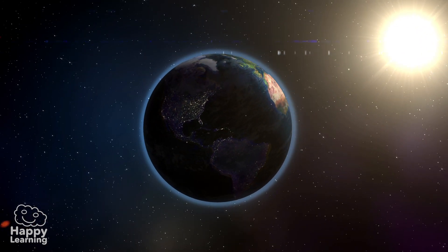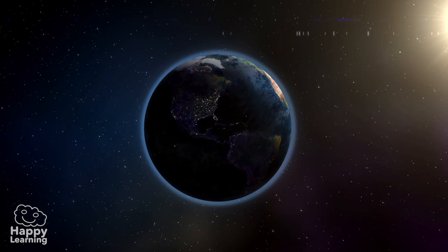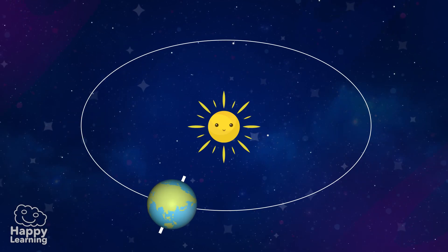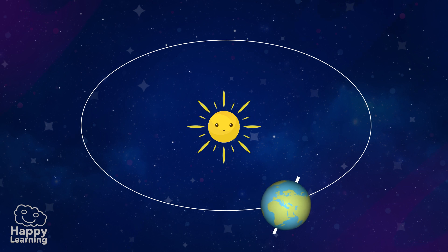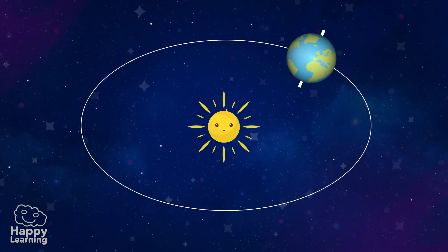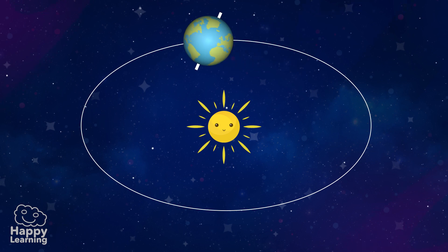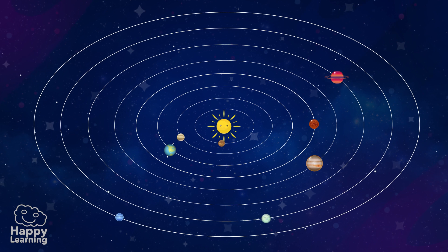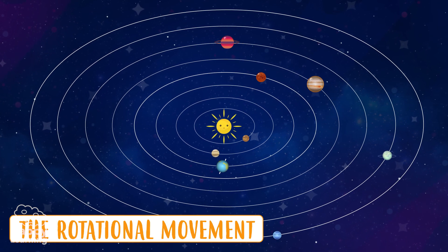Hey Happy Friends, have a look at these images. It's our planet the Earth going around the Sun. All the planets in the solar system do this, and this movement is called the rotational movement.